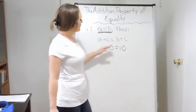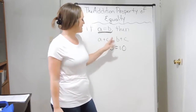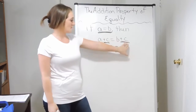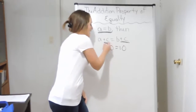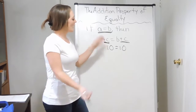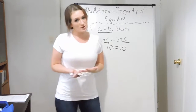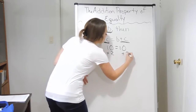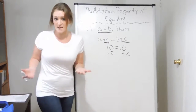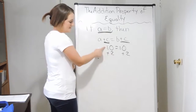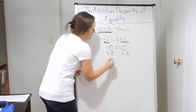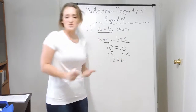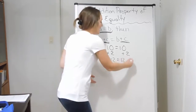10 equals 10 — that's true. The next part of the property says, well, if I add C to both sides — notice I'm adding the C over here on the left, I'm also adding it on the right-hand side — I'm adding the same thing. This is pretty much saying that I can add the same thing to both sides and it's still going to be true. So if I have 10 equals 10 and I decide to add 2 to both sides, I still have a true equation. Because 10 plus 2 is 12 on the left, and 10 plus 2 is 12 on the right. And 12 does equal 12 — that is a true equation.